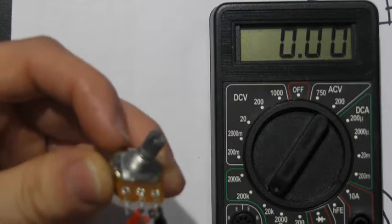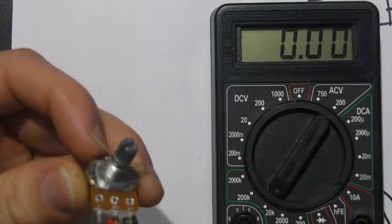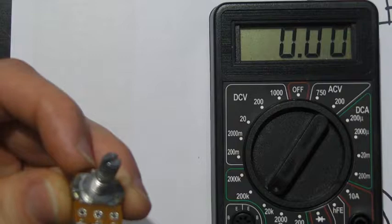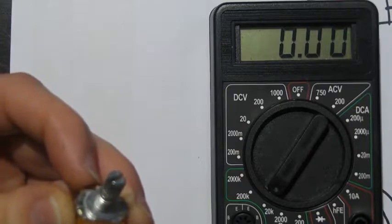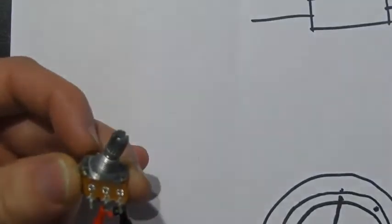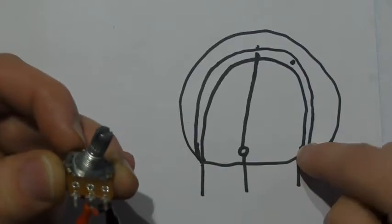So the potentiometer is turned all the way to one side at the minute and it just so happens that between the wiper and the other connection we have zero ohms. So we know the wiper in this case is pretty much there.